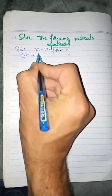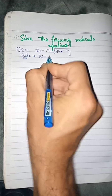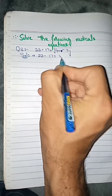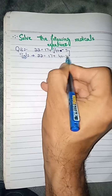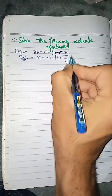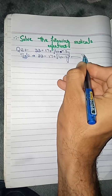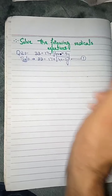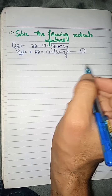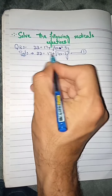The equation is: 22 equals 17 plus the square root of (40 minus 3y). This is the radical equation we need to solve.